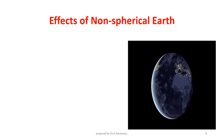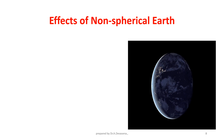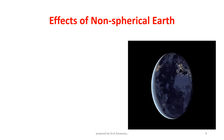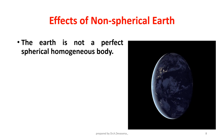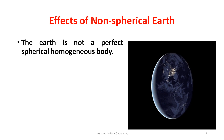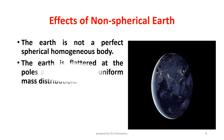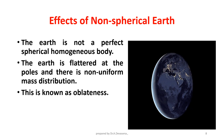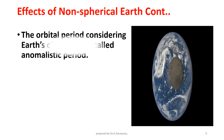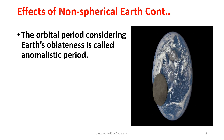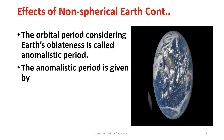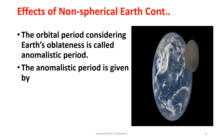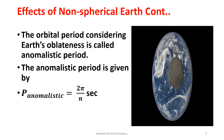Effects of non-spherical Earth. The Earth is not a perfect spherical homogeneous body. The Earth is flattened at the poles and there is non-uniform mass distribution. This is known as obliqueness. The orbital period considering Earth's obliqueness is called the anomalistic period. The anomalistic period is given by P_anomalistic = 2π divided by n seconds.